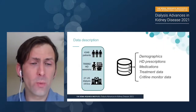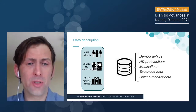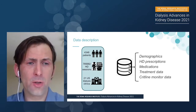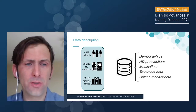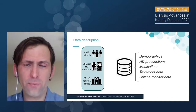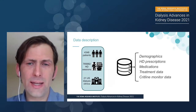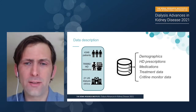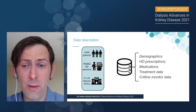We made use of the database of dialysis session information from the Renal Research Institute network. We looked at 21 dialysis clinics across the US, with about three quarters of a million haemodialysis sessions and over 4,000 patients. We extracted demographic information, dialysis prescriptions, patient medications, and treatment data. In a subset of the cohort, we looked at data from the CRIT line monitor, which included oxygen saturation and relative blood volume on a minute-by-minute basis.